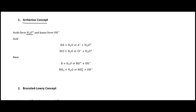The Arrhenius concept is the idea that acids form H3O plus and bases form OH minus. The general formula for an Arrhenius acid has some acid HA plus H2O forming A minus and H3O plus. A concrete example is HCl. For bases, a base plus H2O goes to the protonated base and OH minus, so ammonia plus H2O goes to ammonium plus OH minus.